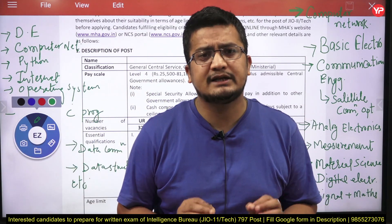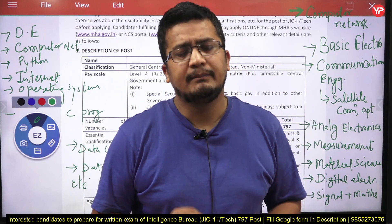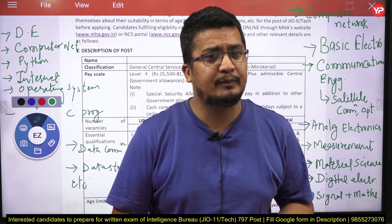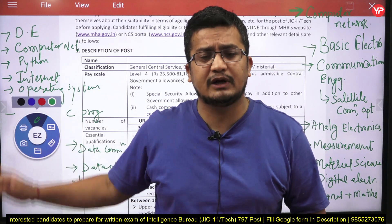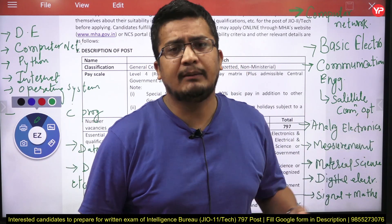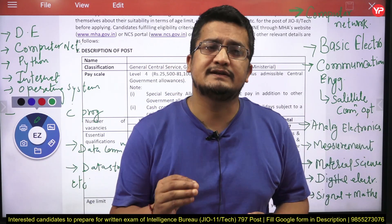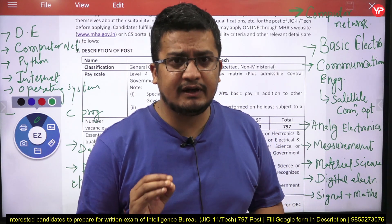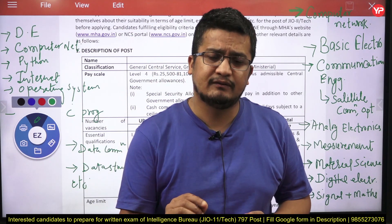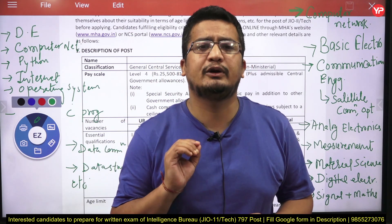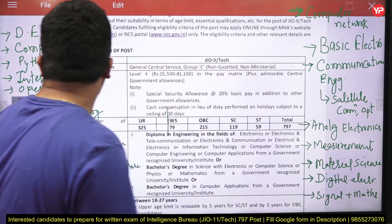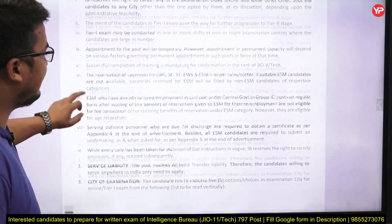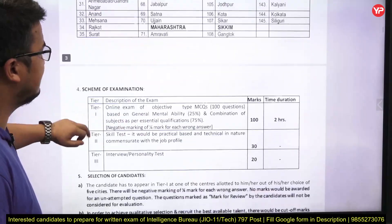Then digital electronics as mentioned earlier, and mathematics plus signals — the basic signal part. Sampling is a very important topic both from the computer science and electronics point of view. Apart from that, Fourier series is a very important topic. Filters are also important from the written exam perspective. Now let's move ahead and look at the exam structure.